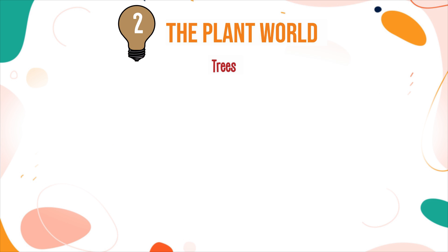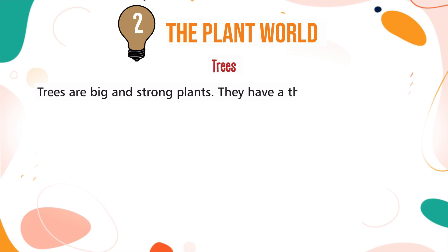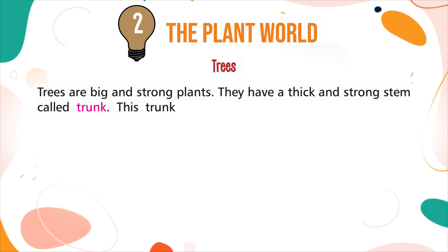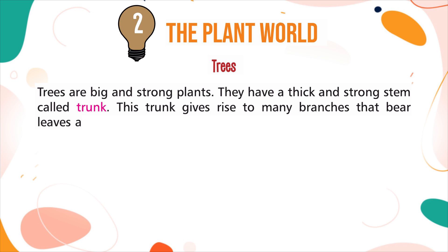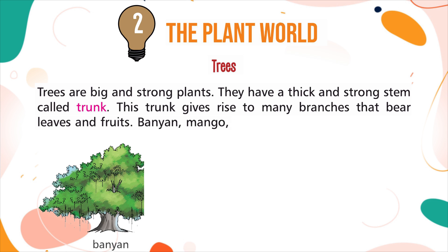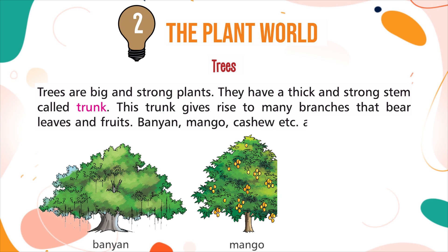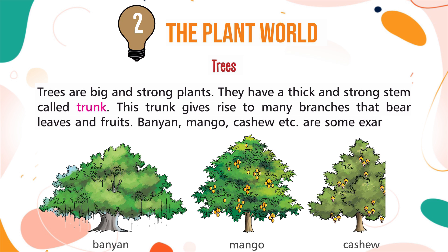Trees are big and strong plants. They have a thick and strong stem called a trunk. This trunk gives rise to many branches that bear leaves and fruits. Banyan, mango, cashew, etc. are some examples of trees.